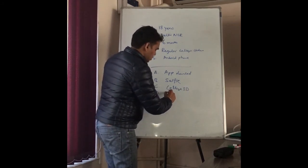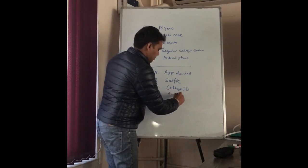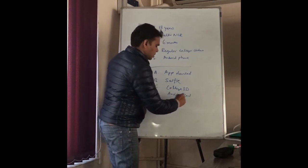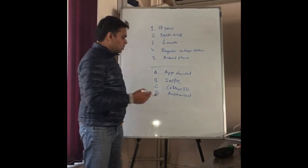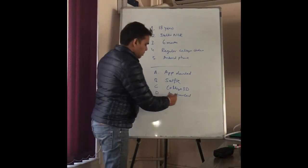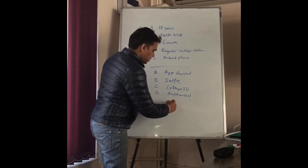The fourth thing is the Aadhaar card, front and back. Then the next step will be the user's EKYC.